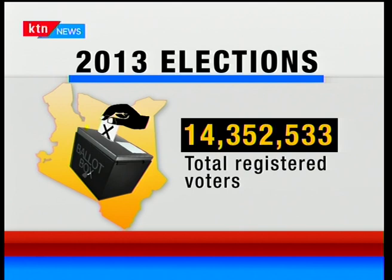The parties at play then were quite different from now. Jubilee was an alliance of the National Alliance of Uhuru Kenyatta and the United Republican Party of William Ruto, who merged to form the Jubilee Alliance. For Raila Odinga, his Orange Democratic Movement joined with other parties including WIPA Democratic Movement to form CORD.